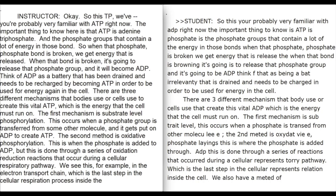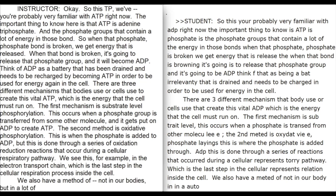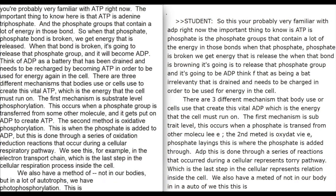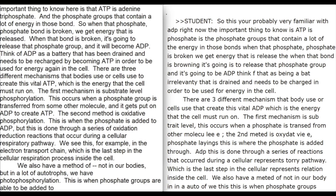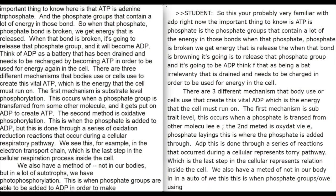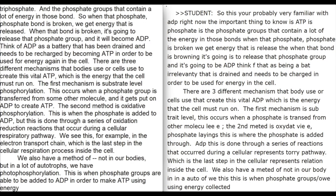We also have a method — not in our bodies, but in a lot of autotrophs — called photophosphorylation. This is when phosphate groups are able to be added to ADP to make ATP using energy collected from sunlight.